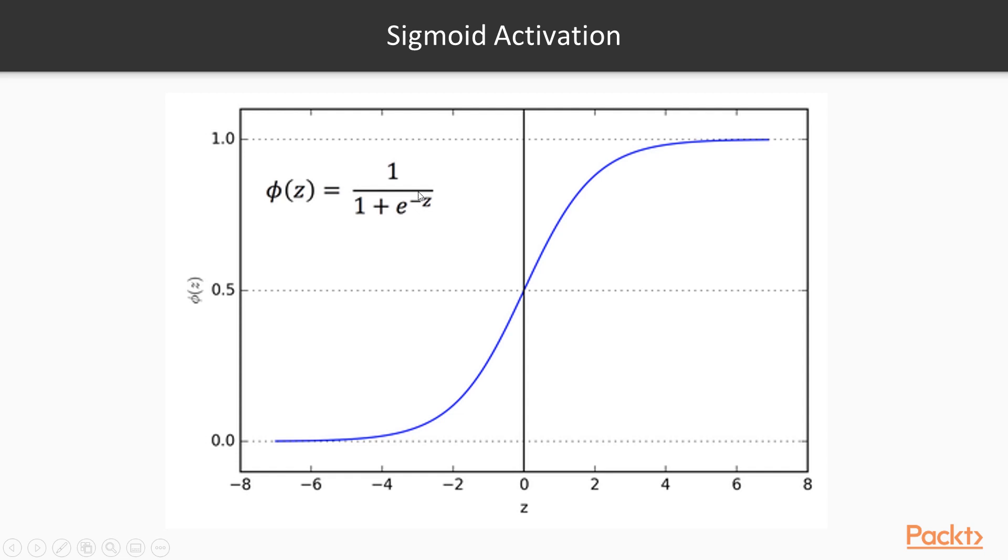So once we have this, we will have a probabilistic score between 0 and 1. And that is what we will be going with finally.